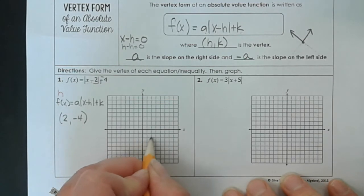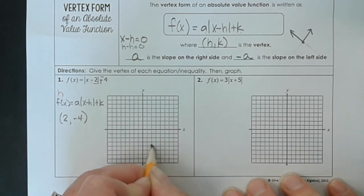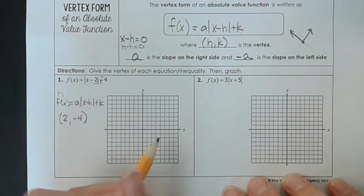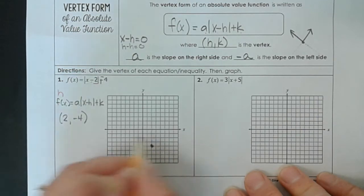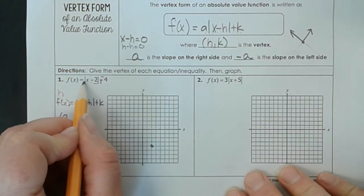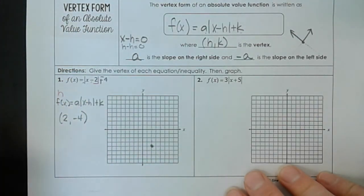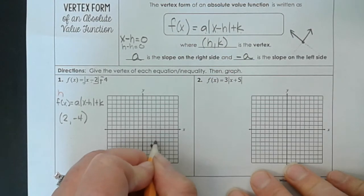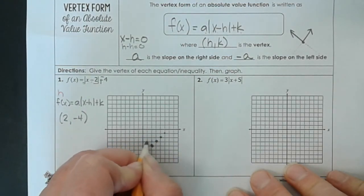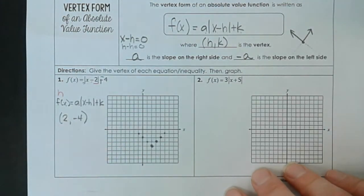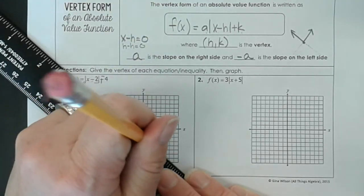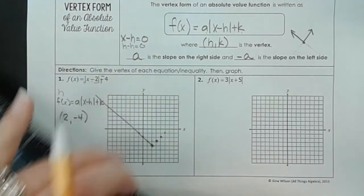We're going to graph that. We're going to go over 2, down 4. And then we can use the slope of our line to figure out where the sides of this absolute value function is going to be. So we go up 1 over 1 because the slope is a. And look right here, there's nothing here. Well if you have something invisible that's multiplied, that's a 1. So right here we see nothing, that makes it a 1. So we go up 1, over 1, in both directions, because the slope of the other line is negative, is a negative 1.